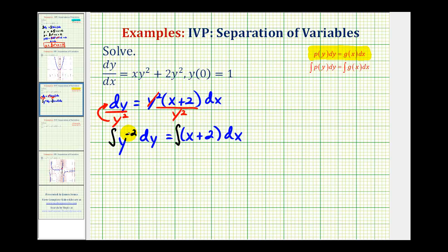Here we'll apply the power rule, so we'll add one to negative two. That'll be y to the negative one divided by negative one. We do have a constant of integration here, but we'll also have one on the right. So let's go ahead and just include it on the right side. The integral of the quantity x plus two with respect to x would be x squared divided by two plus two x plus our constant of integration.